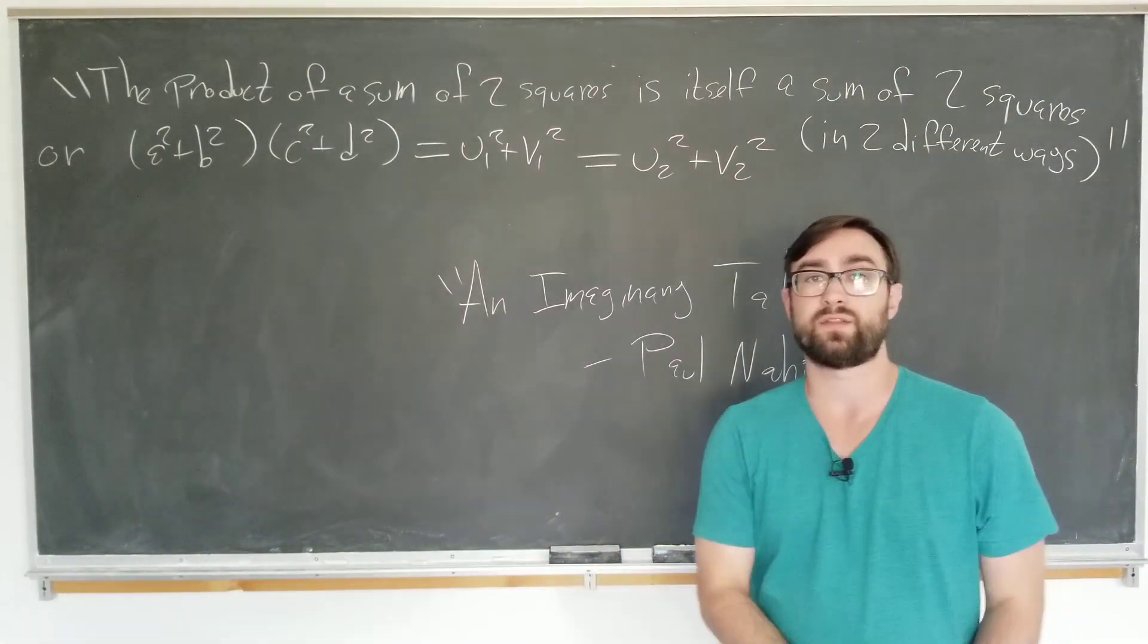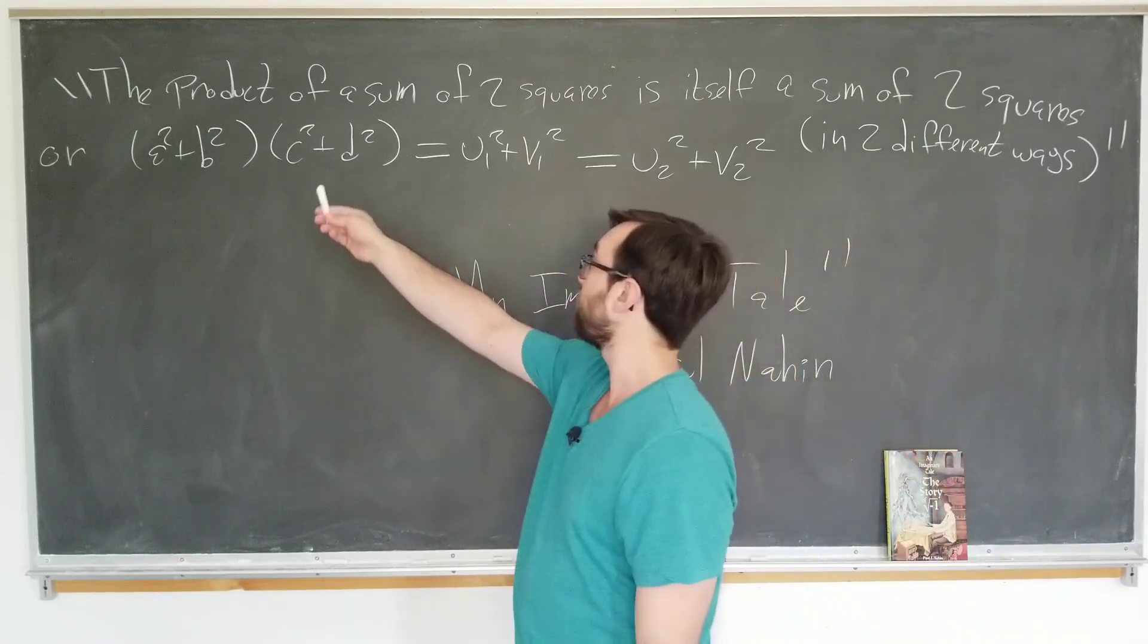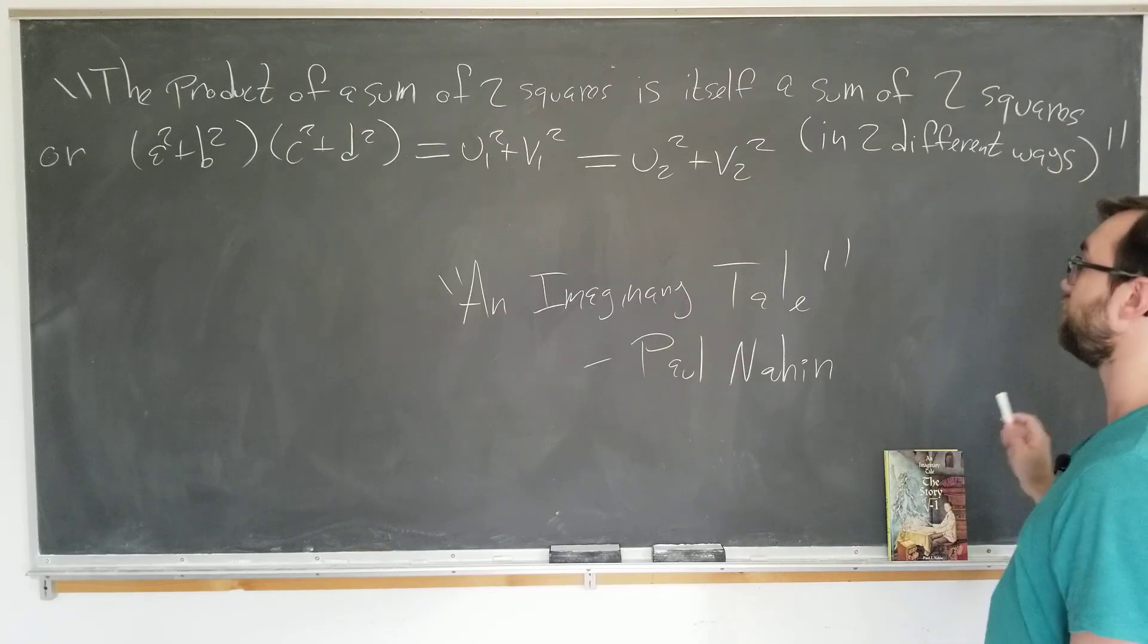Hi everyone and welcome to Mostly Math. Today we will be investigating the claim written above that the product of a sum of two squares is itself a sum of two squares in two different ways.